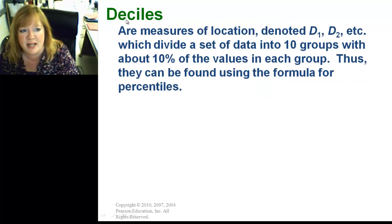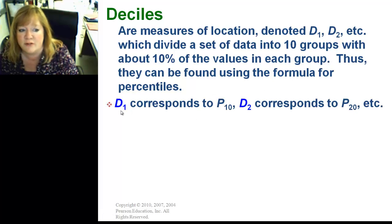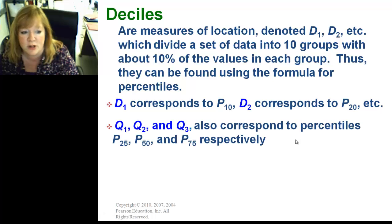Deciles. Their measures of location denoted D1, D2, and so on. And, decimal is base 10. So, deci is 10. So, it's 10 equal groups with about 10% of the values in each group. Thus, they can also be found using the formula for percentiles. For example, D1 would correspond to P10. D2 would correspond to P20, and so on. Q1, Q2, Q3 also correspond to percentiles. You could do P25, P50, and P75, respectively.